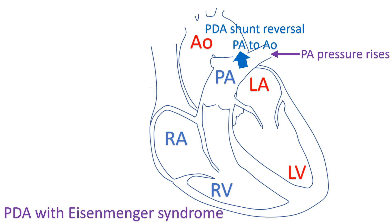When the pressure in the pulmonary artery rises above that in the aorta, the shunt across the PDA reverses so that blood flows from the pulmonary artery to the aorta. This usually causes cyanosis of the lower limbs, known as differential cyanosis. Upper limbs are not cyanosed because the ductus joins the aorta beyond the origin of the left subclavian artery.